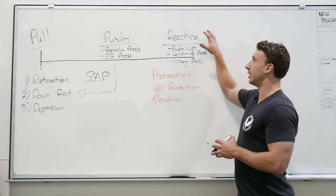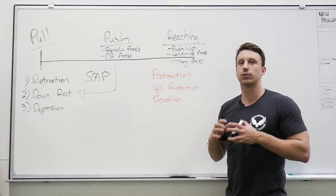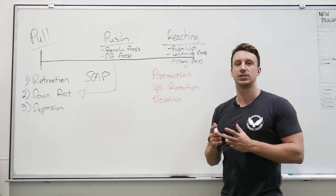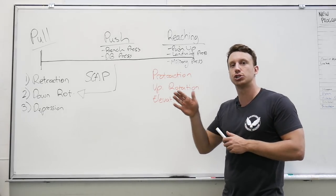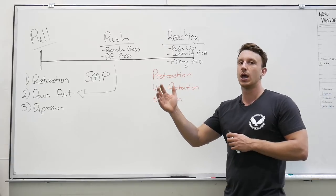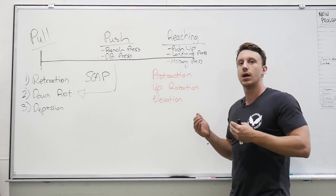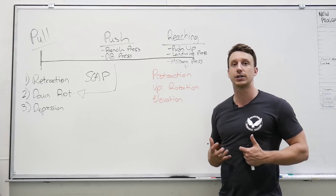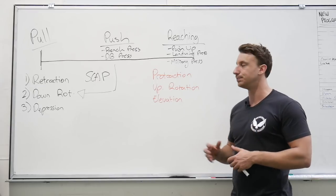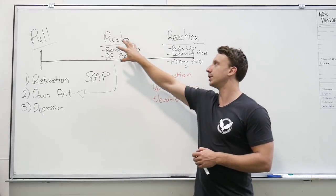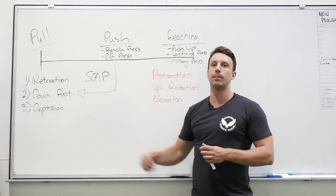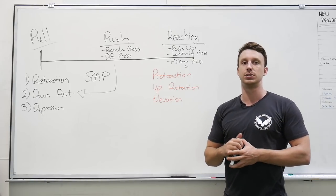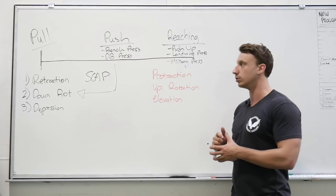The second reason why we like reaching movements so much here at Melbourne Strength Culture is that through the movement of protraction and upward rotation you get a contraction of the serratus anterior and as that serratus anterior pulls the shoulder blade forward on the rib cage, it pulls the rib cage back. This posterior shift of the rib cage allows for a far greater core contraction in order to stabilize the rib cage in the spine. This is something that through pushing movements like bench press and dumbbell pressing, you do not get because you're in such an extended position trying to maintain your shoulders in a back and down position to support and stabilize the glenohumeral joint.